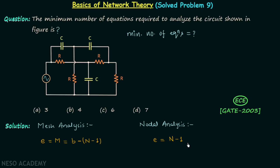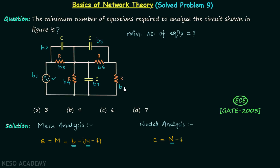Using these formulas we can find the minimum number of equations. We need the total number of branches and the total number of principal nodes. In our network, this is one branch because one element is in this wire. Following the same definition, this is branch 2, branch 3, branch 4, branch 5, branch 6, branch 7, and the final one is branch number 8.